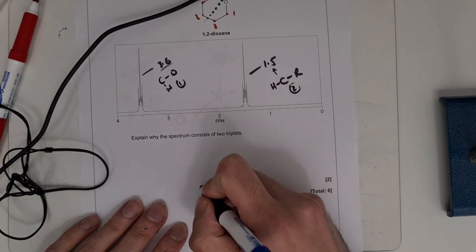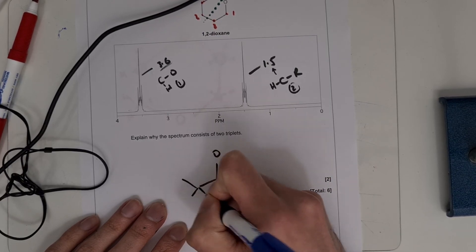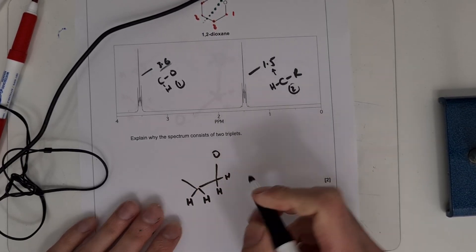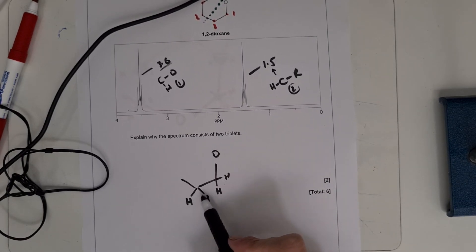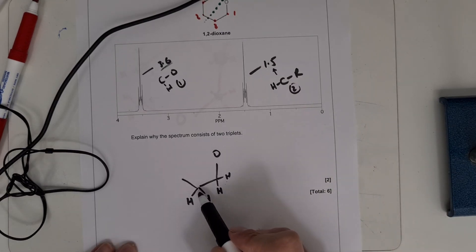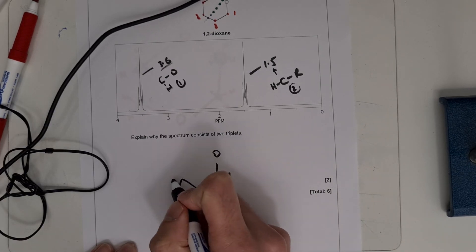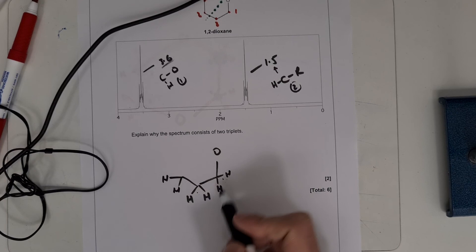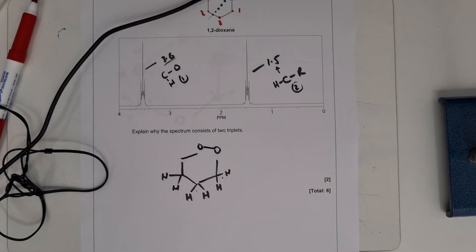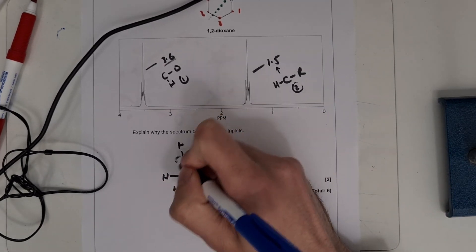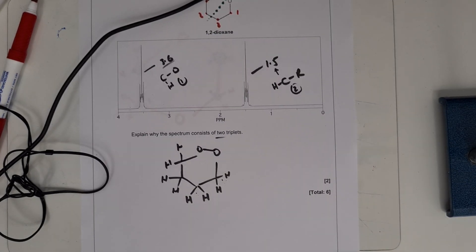To explain why the spectrum consists of two triplets: environment 1 has two hydrogens adjacent to it, forming a triplet, and environment 2 also has two adjacent hydrogens forming a triplet. In the other direction, there are two adjacent hydrogens but they're in the same identical environment. So both environments form triplets because each has exactly two adjacent hydrogens from a different environment.